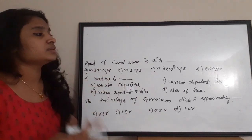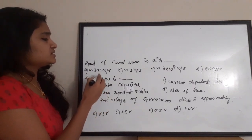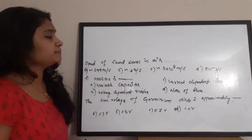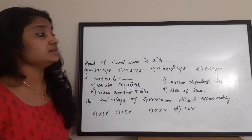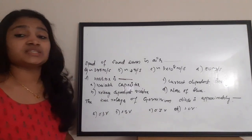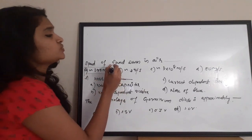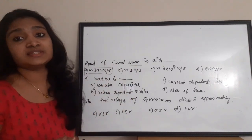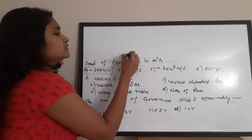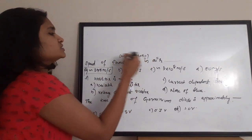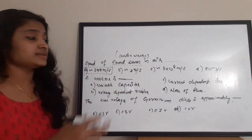Next question: the speed of sound waves in air is approximately — A) 340–345 m/s, B) 3 m/s, C) 3×10⁸ m/s, D) 80 m/s. The correct answer is approximately 345 meters per second, which is the speed of audio/sound waves in air. The correct answer is option A.